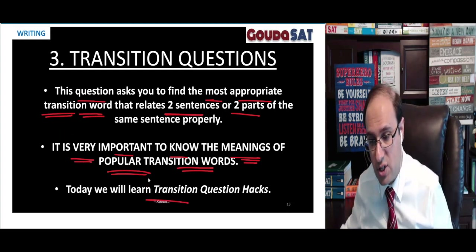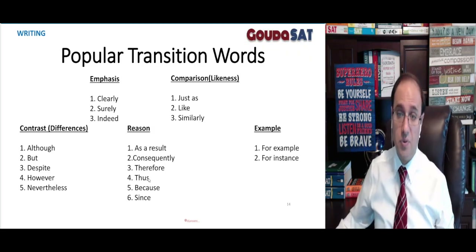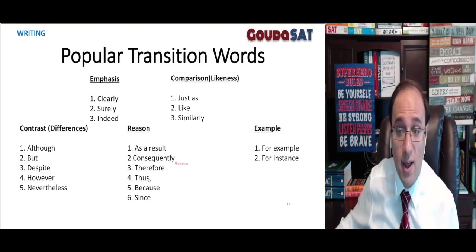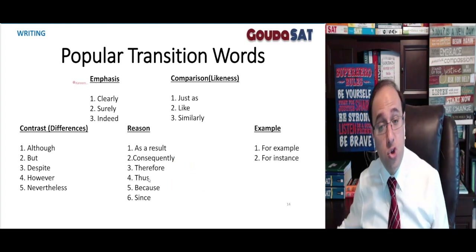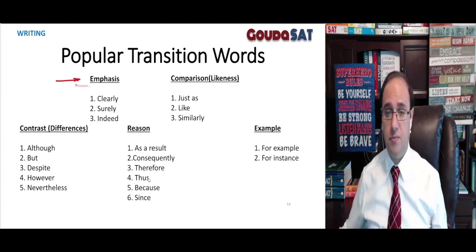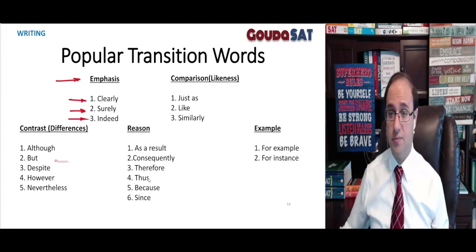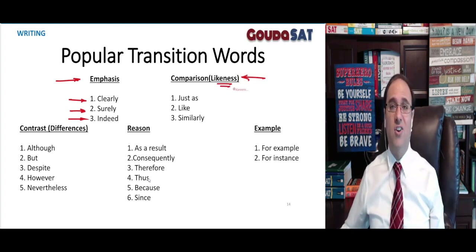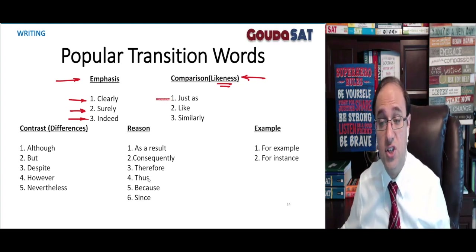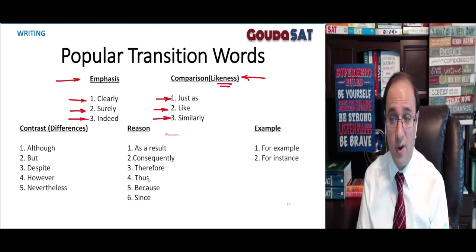Today we will learn transition question hacks, and before that we will learn some popular transition words. Here are some popular transition words that appear very frequently on the SAT test in the writing section. To show emphasis — to stress something — we can use words like clearly, surely, indeed. To make a comparison, to say that two things are similar to each other, we can use words like just as, like, similarly, similar to, and so on.